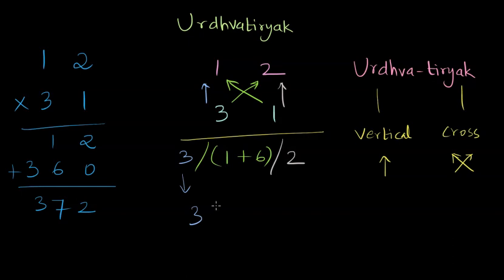So 3, then 1 plus 6, 7, and then the 2. So 372 is the answer that we got. And as we can see, we have matched the answer with the result that we got using the conventional multiplication.